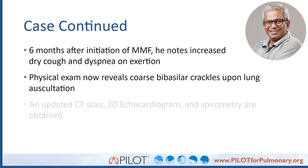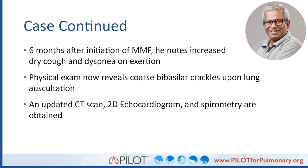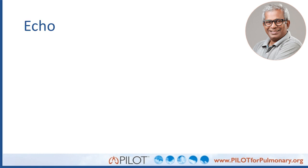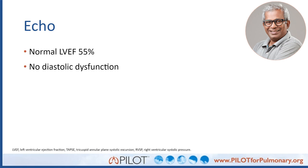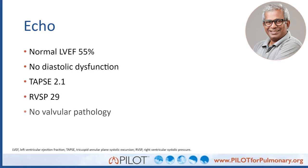To work this up further, we obtain a CT scan, an echocardiogram, and repeat spirometry. The echocardiogram is done primarily to rule out cardiac pathology — particularly pulmonary hypertension — that could account for his symptoms. His echocardiogram looks okay: left-sided function is preserved, and markers of pulmonary hypertension including TAPSE and RVSP are both acceptable.